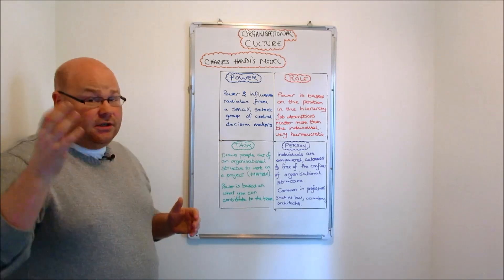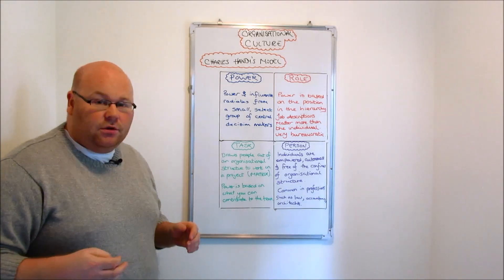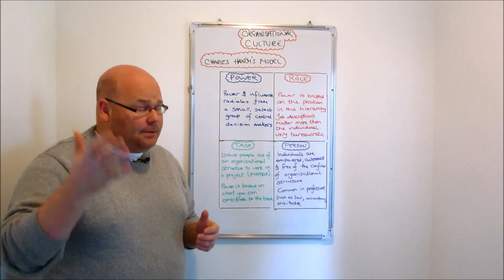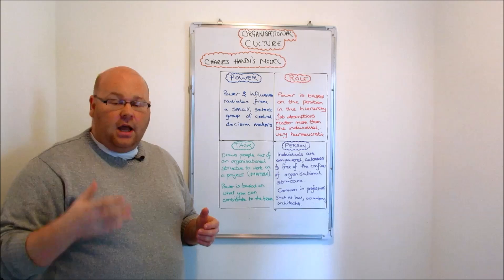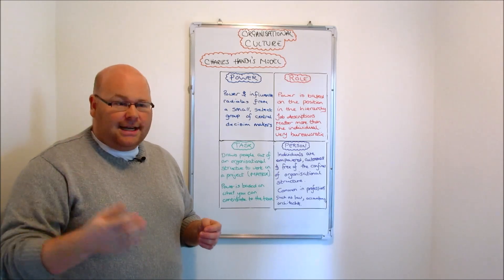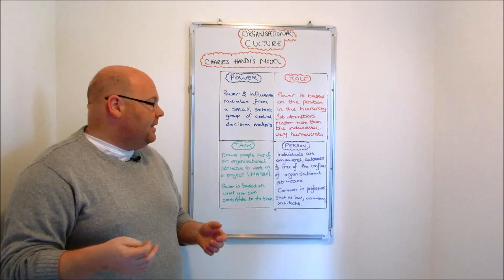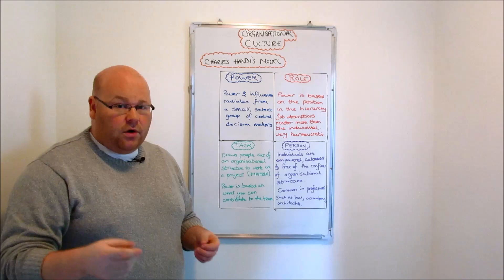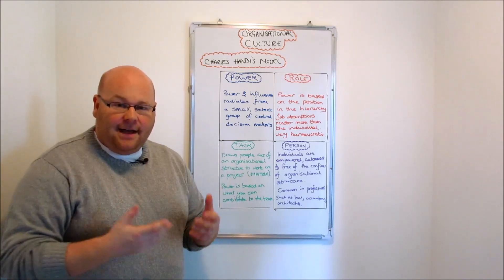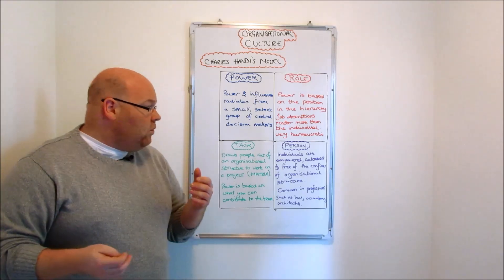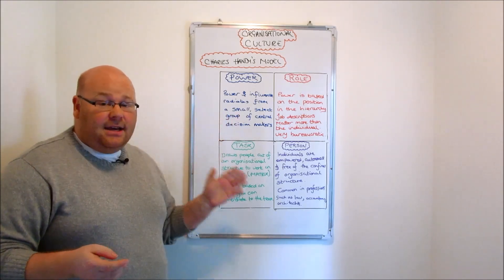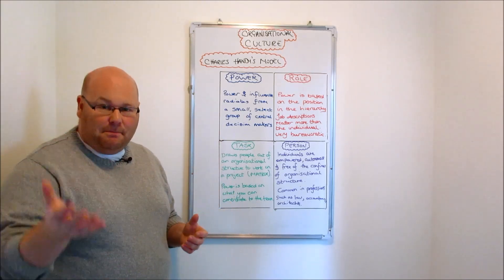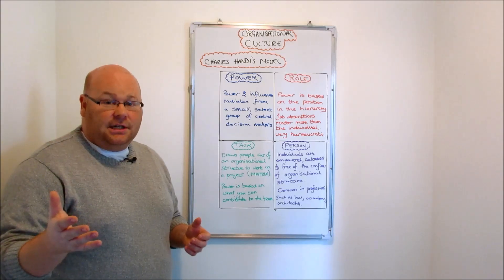So there are four different types of organisational cultures. Key things to remember: organisations have formal cultures that those running them try to set and instil, but we should also remember that informal cultures can develop independently in pockets of workers, entire branches, or departments. We should also remember that Handy didn't say any of these cultures were particularly favourable or better than the others — each has its own issues and its own benefits that organisations need to be aware of.